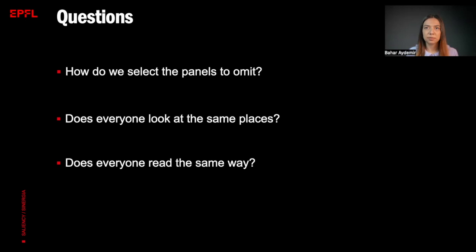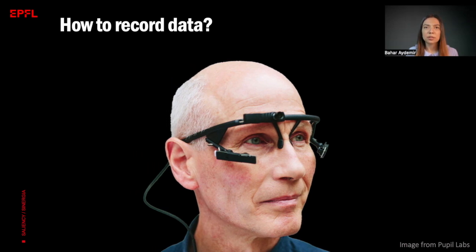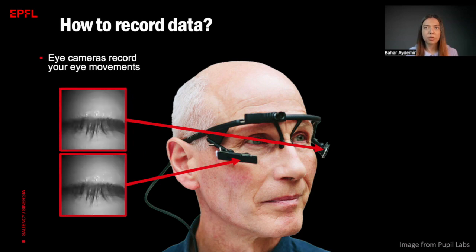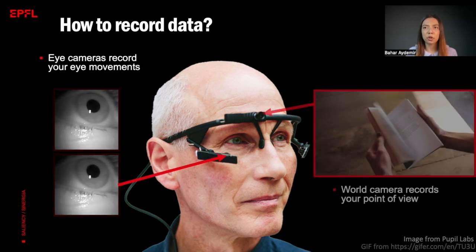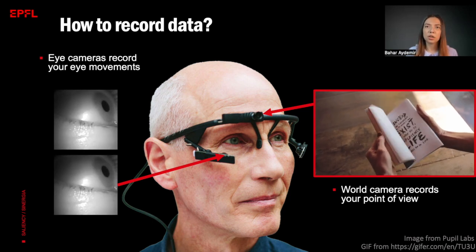The answer is yes. It is possible to record eye movements of a person by using eye tracking technology. Eye tracking is a sensor technology that can detect a person's presence and follow what they are looking at in real time. The technology converts the eye movements into a data stream. There are two eye cameras that record your eye movements and one world camera that records your point of view. After recording these videos, we can track where you look at precisely.